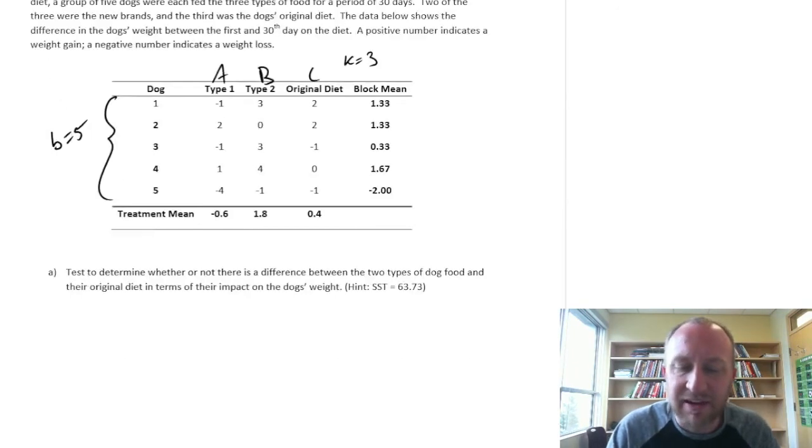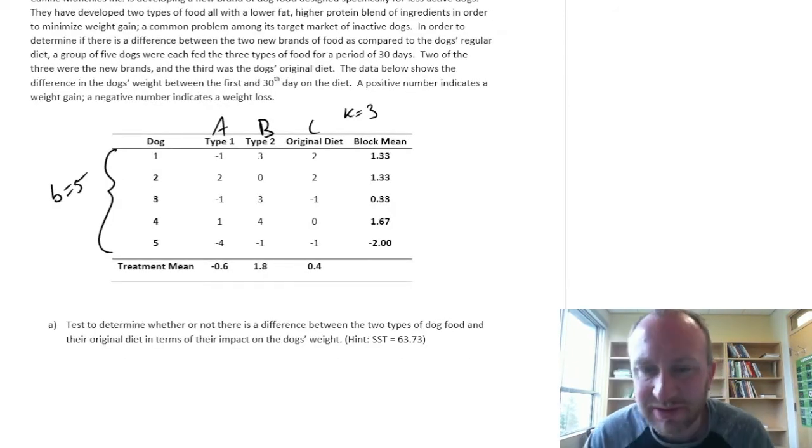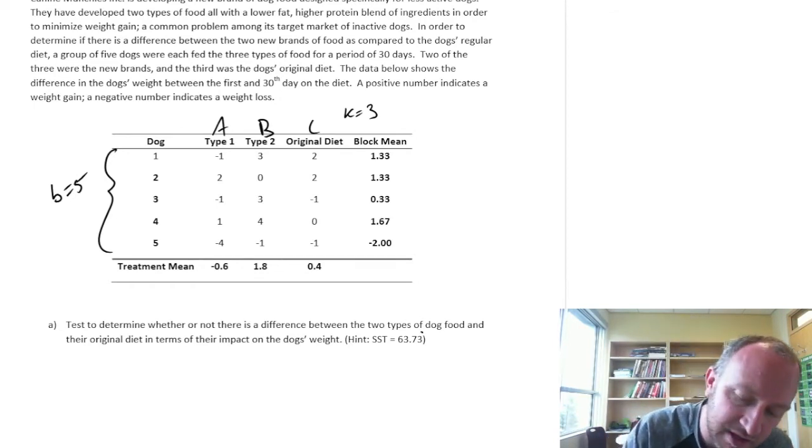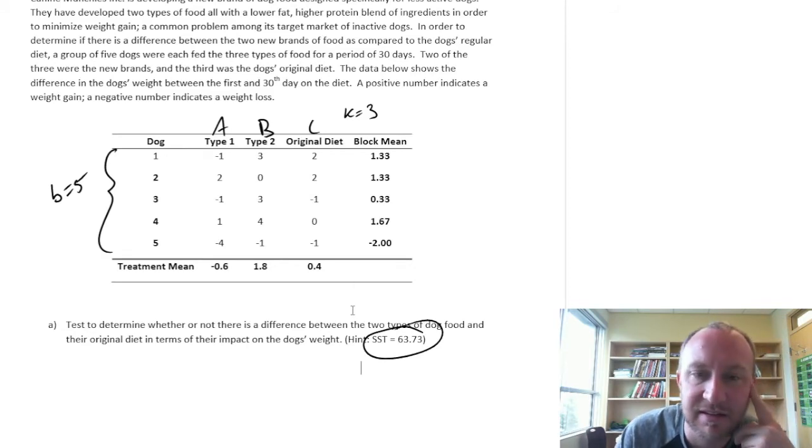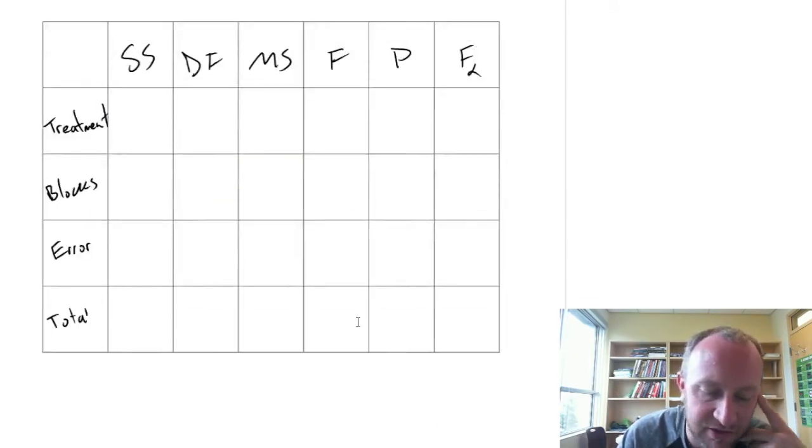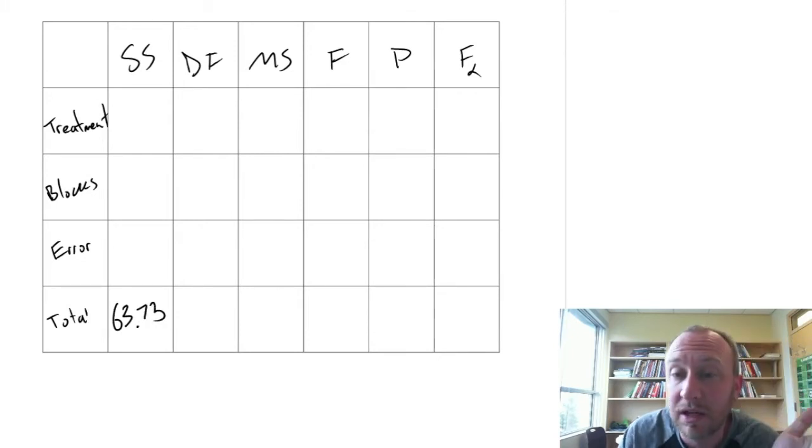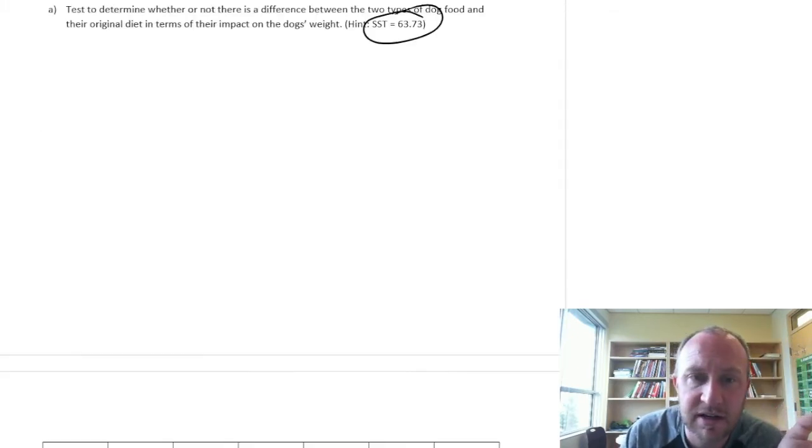So when we're going through any randomized block design, I always give my students either SST or SSE because otherwise to obtain SSE requires matrix algebra. To calculate SST is very time consuming. So here I've provided SST is 63.73. So we can write that in down here. And now we will fill in the rest with our calculations.